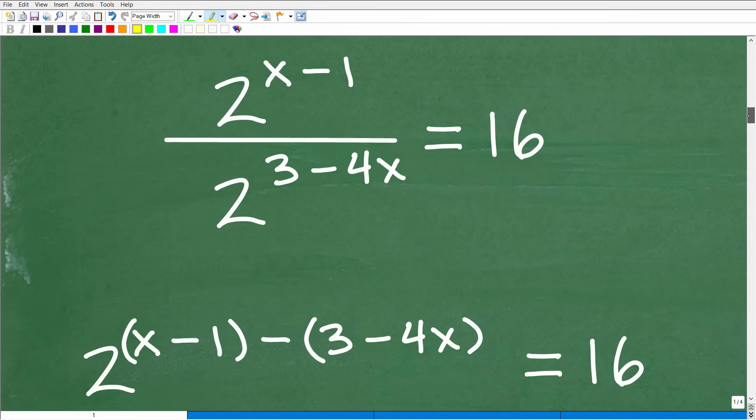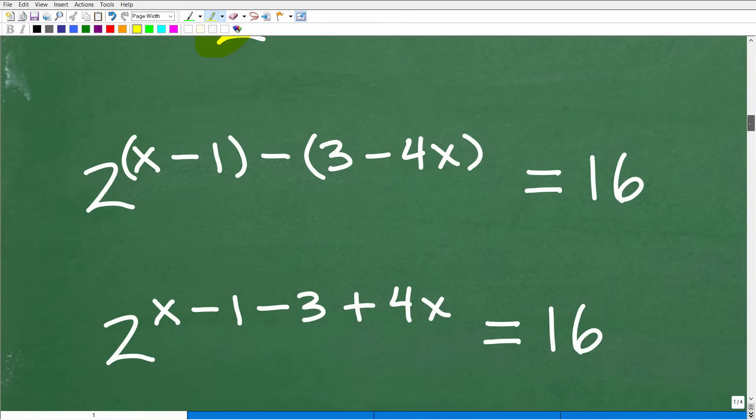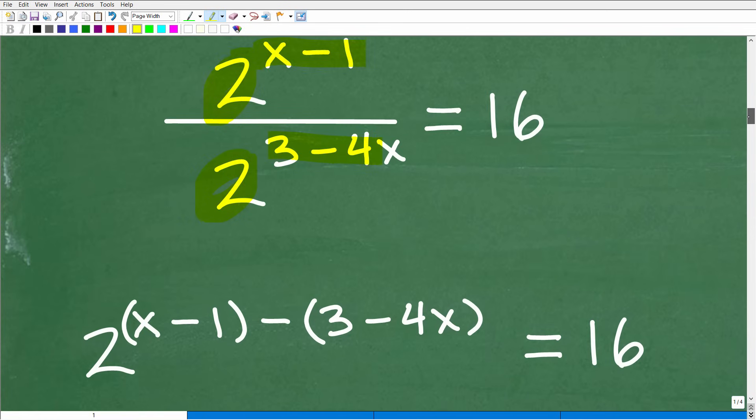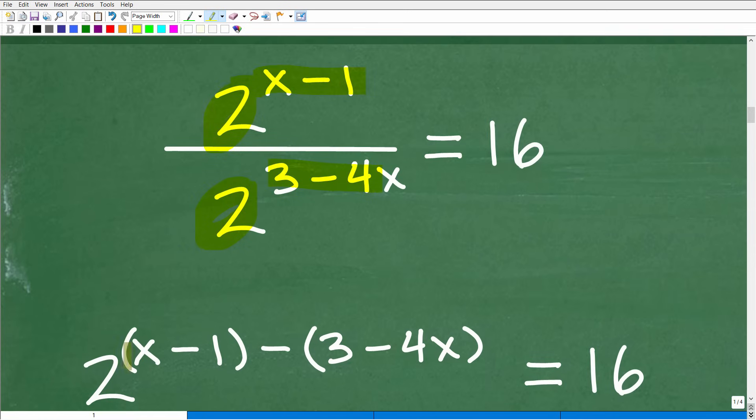Here is the problem. It's an exponential function. I've got some powers going on. I'm going to apply this property because the bases are the same. So this is where experience comes in. Notice how I'm doing this here. I have two and I have the numerator exponent, which is x minus one. Notice how I put that in parentheses and I'm subtracting away this three minus four x, the denominator exponent. But look, I have this in parentheses.